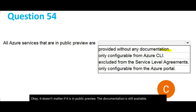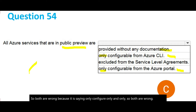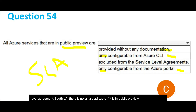The second option says only configurable from CLI, and the last one says only configurable from Azure Portal. Both are wrong because services in public preview are configurable from both. The third option is correct: if a service is in public preview, it is excluded from the SLAs — the service level agreements. There is no SLA applicable in public preview. Consider public preview as a trial mode. So this is the right answer.